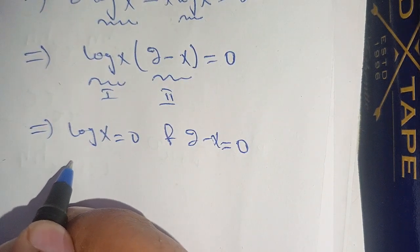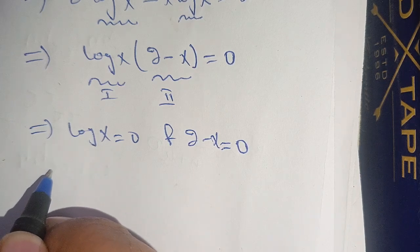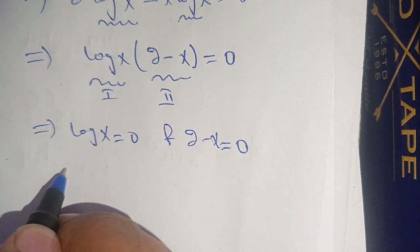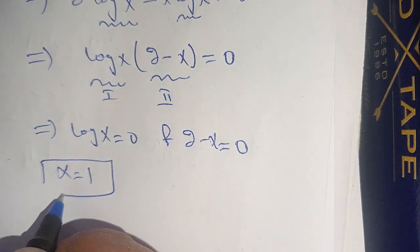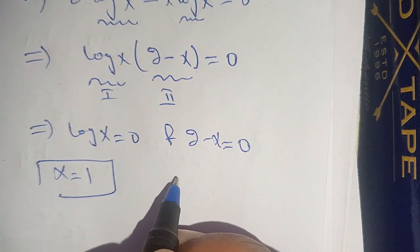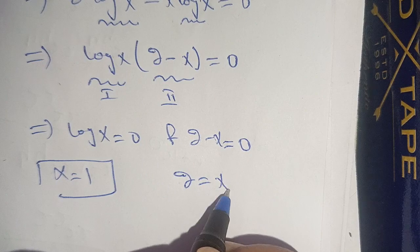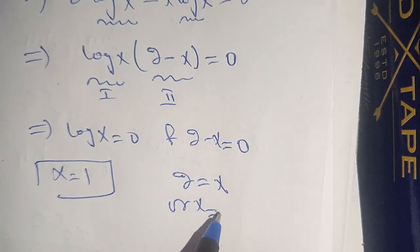We know that log(x) = 0 when x = 1. And from here we have 2 = x, or x = 2.